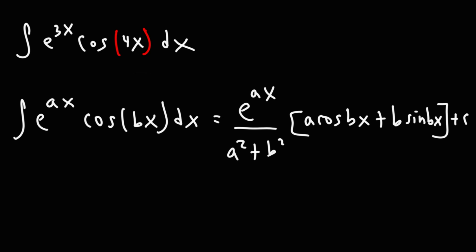So in this problem, we need to identify a and b. A is 3, b is 4. So I'm going to write that here. This is going to be e raised to the 3x over a squared, which is 3 squared, and then plus b squared, which is 4 squared.